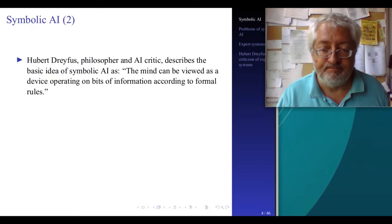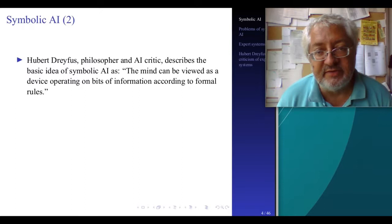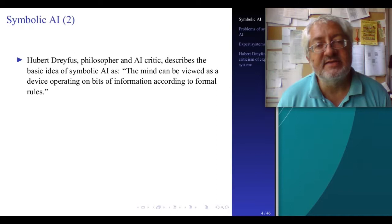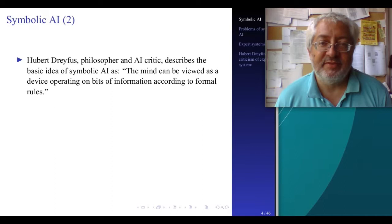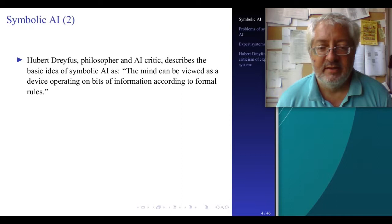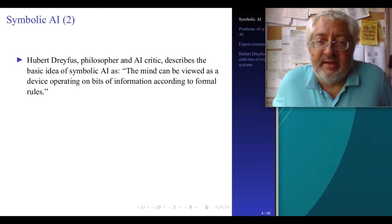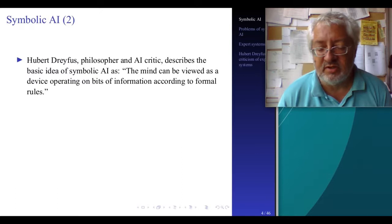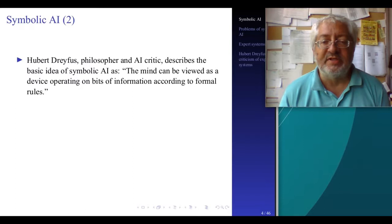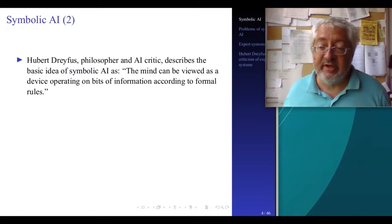Now Hubert Dreyfus, of whom we will talk more later, a philosopher and famous AI critic, describes the basic idea of symbolic AI as: the mind can be viewed as a device operating on bits of information according to formal rules. Now this is not entirely fair, because Dreyfus here talks about the mind. We already clarified that the mind is not actually the target of AI engineering. No computer engineer wants to actually make a mind, and symbolic AI generally does not attempt to create minds. This would be a strong AI claim.